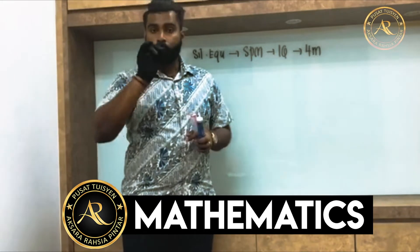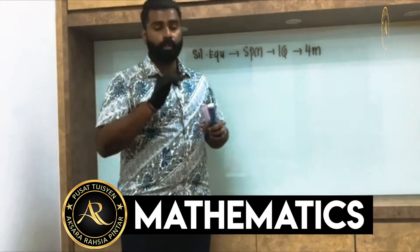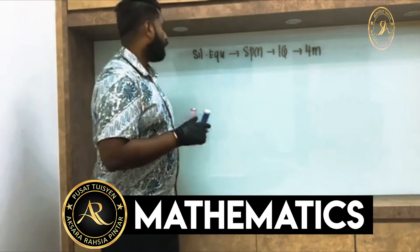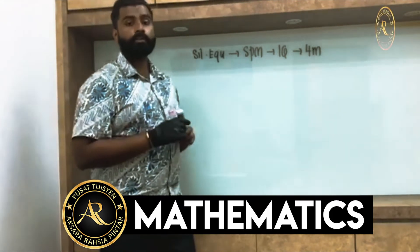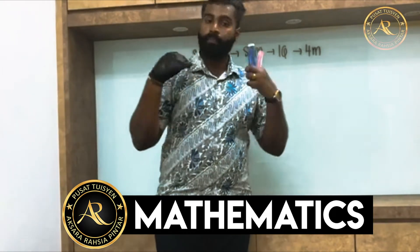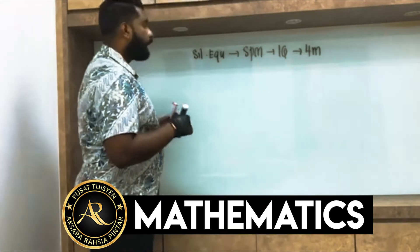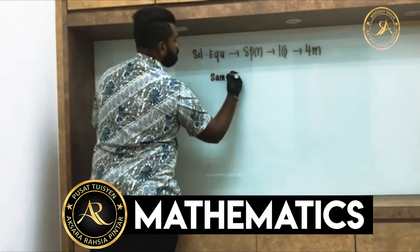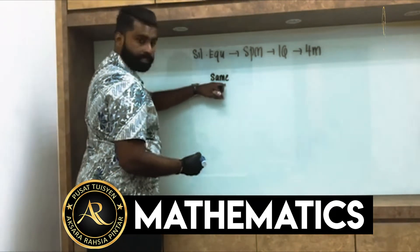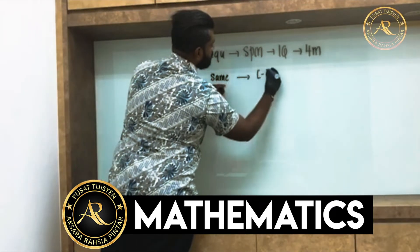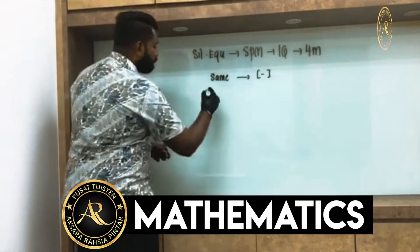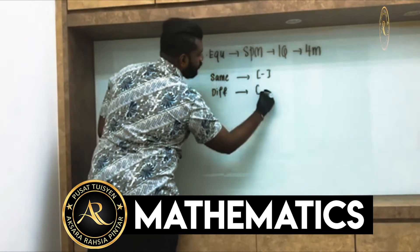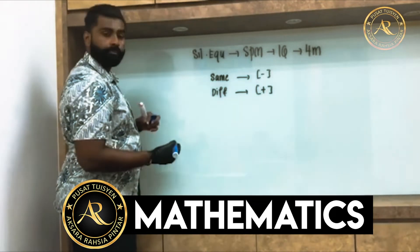To solve simultaneous equations, we have mainly two methods: elimination and substitution. Today we're going to do the elimination method. Now, the key concept to memorize: when the signs are the same, we do minus; when they are different, we do plus.